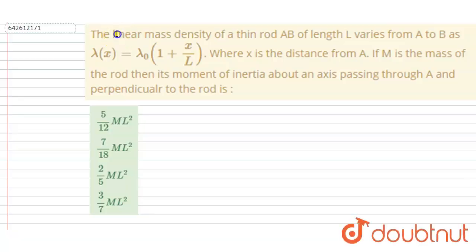Hello everyone. The linear mass density of a thin rod AB of length L varies from A to B, where X is the distance from A and M is the mass of the rod. You have to find the moment of inertia about an axis passing through A and perpendicular to the rod.